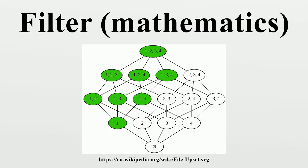1. The empty set cannot contain anything, so it will not belong to our filter. 2. If two subsets E and F both might contain what we are looking for, then so might their intersection. Thus our filter should be closed with respect to finite intersection. 3. If a set E might contain what we are looking for, so might any superset of it. Thus our filter is upward closed.